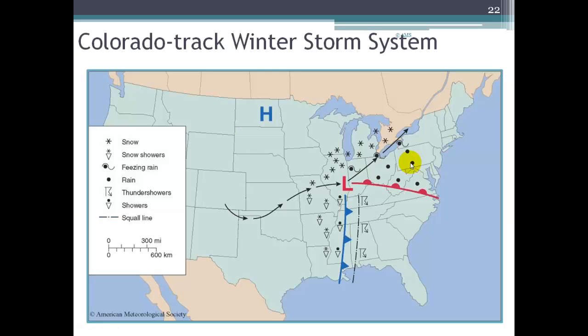Here's one of the tracks, the Colorado track, which is typical for a winter storm. And you can see the mid-latitude cyclone. So here's the low pressure that's defining the system. Here's high pressure behind it. And you see the different symbols here.